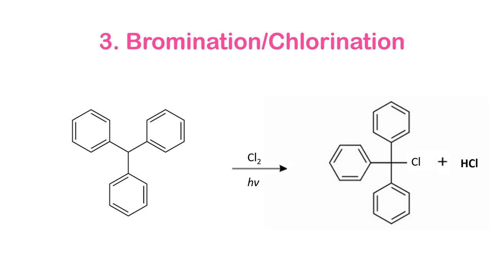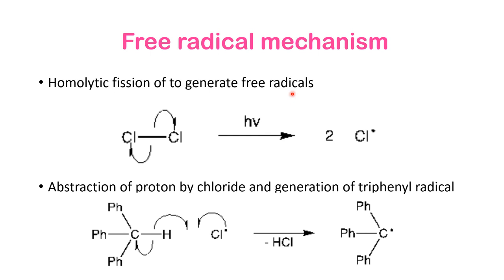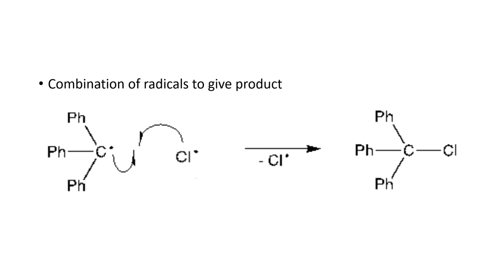Halogenation — bromination or chlorination — happens at the central carbon rather than at the ring because of radical formation. Using Cl2, there is loss of HCl and chloride attaches to the central carbon to give triphenyl chloromethane. The free radical mechanism proceeds as follows: Cl2 undergoes homolytic fission to form two chlorine free radicals; one chlorine radical abstracts the central hydrogen with loss of HCl to generate the trityl free radical; the trityl free radical then reacts with the remaining chlorine radical to give the product.